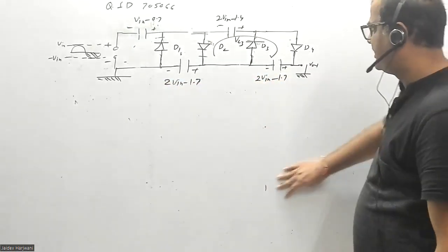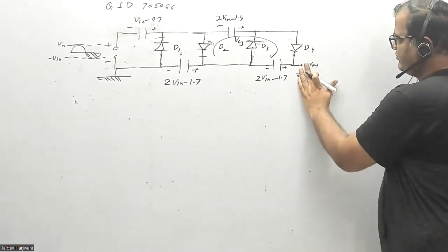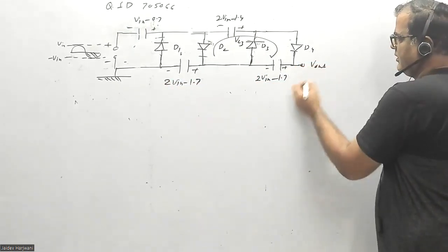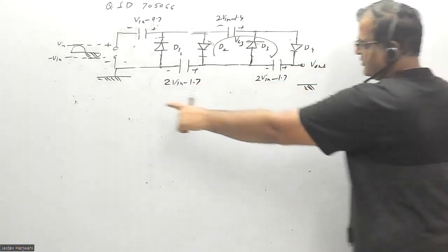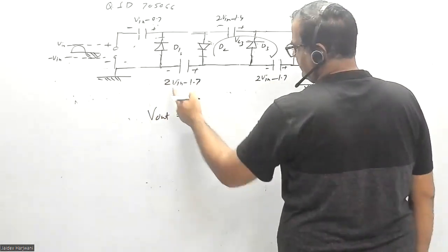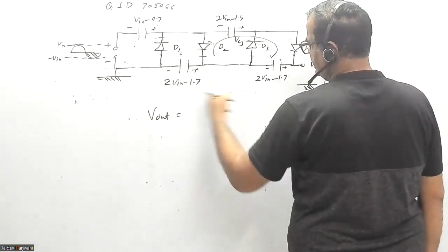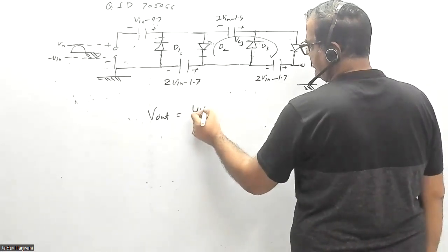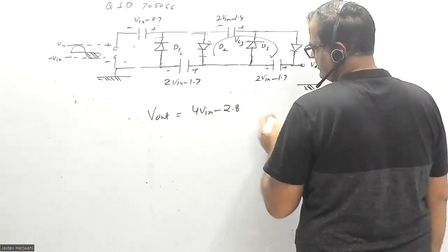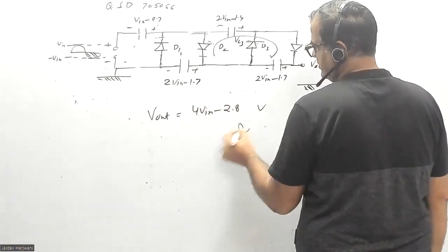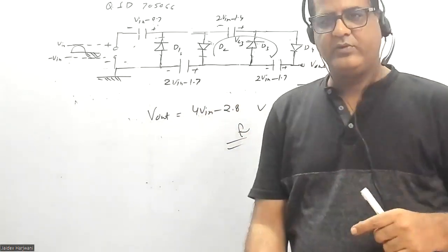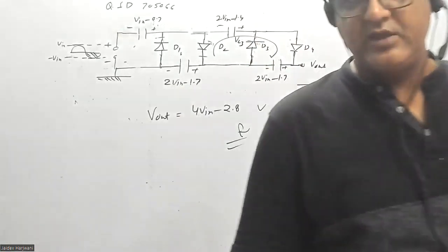The question asks for V output at this terminal with respect to ground. V output equals the sum of V_C2 and V_C4, which gives 4V input minus 2.8 volts. This is the correct answer for this question. Hope you understand the question. Thank you very much.